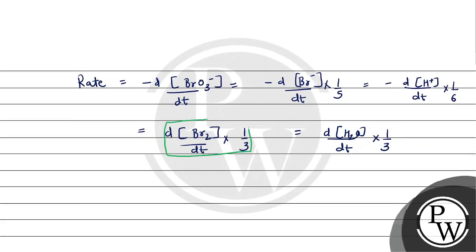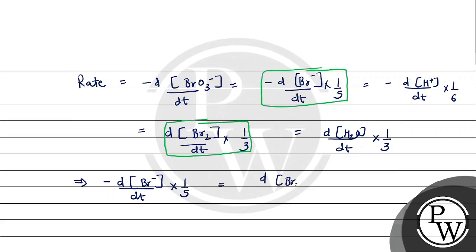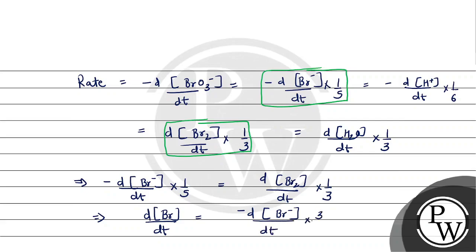Question में हमसे पूछा गया है rate of appearance of bromine और rate of disappearance of bromide — इन दोनों के respect में हमें answer देना है। तो हमारे पास आएगा: minus d[Br⁻]/dt × 1/5 = d[Br₂]/dt × 1/3, और solve करने पर: d[Br₂]/dt = minus d[Br⁻]/dt × 3/5.